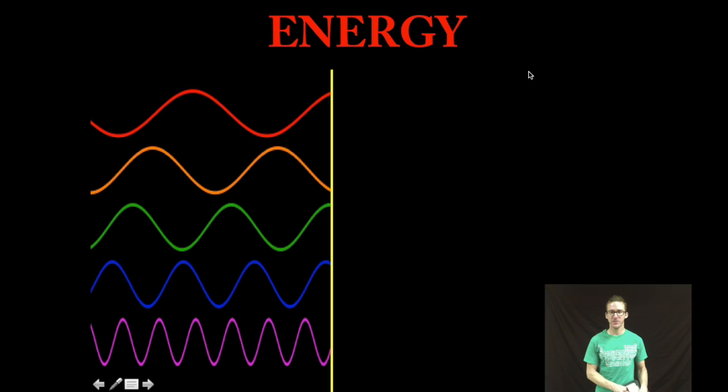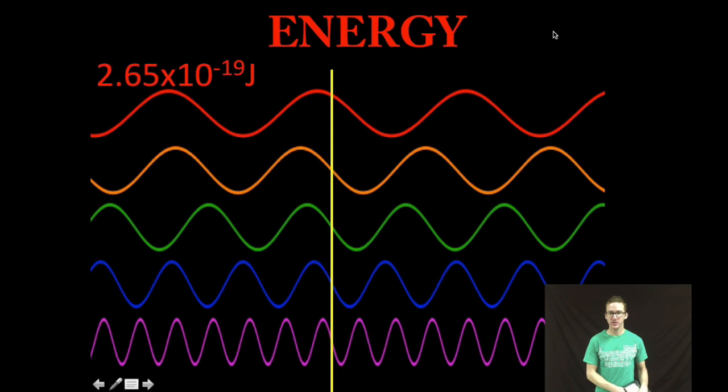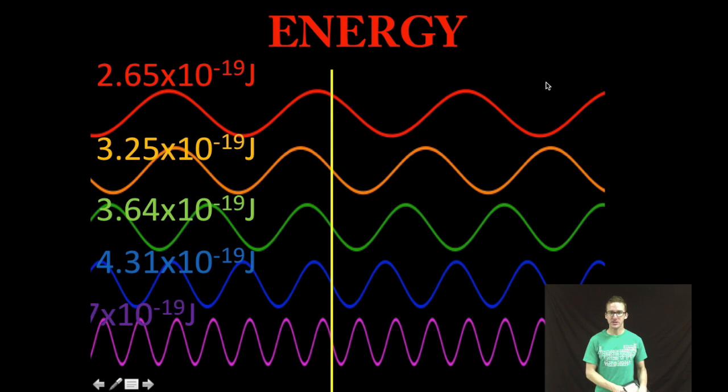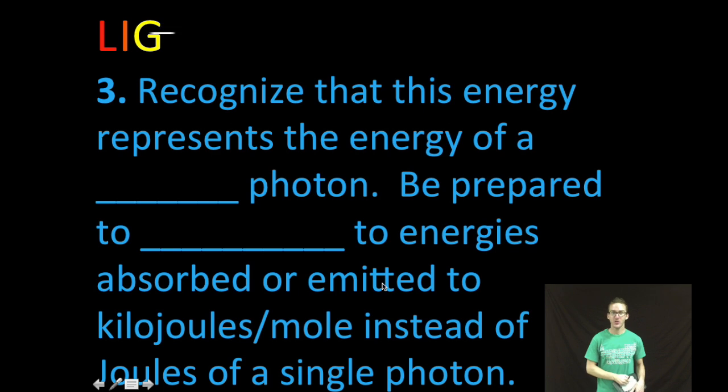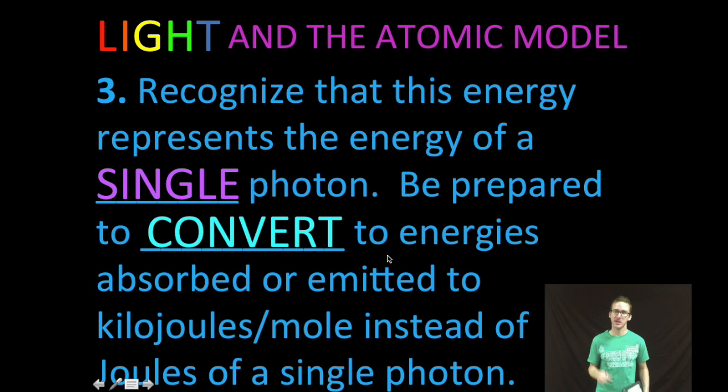As we come back to our examples of visible light, I'm going to count again for one second. One, one thousand. Take a look at the energy values for the different colors of light. Notice that as the frequency increases, as I go from red light down to violet light, energy in joules increases as well. Okay, and lastly, recognize that this energy represents the energy of a single photon. So be prepared to convert those energies absorbed or emitted to kilojoules per mole instead of joules of a single photon.